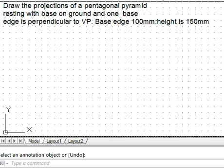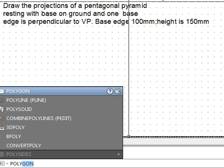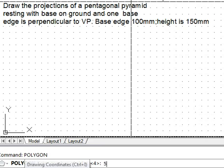The true shape of the base, let us draw using the polygon command. We have five sides because it is a pentagon, with edge method because edge length is given.